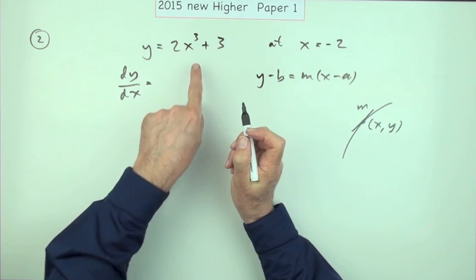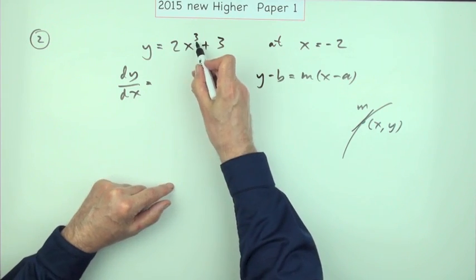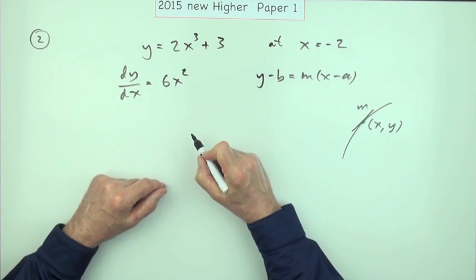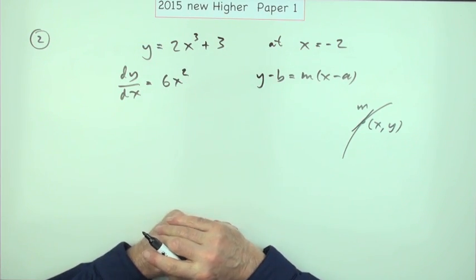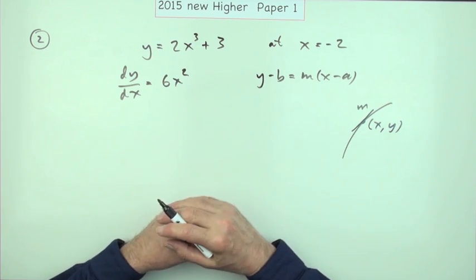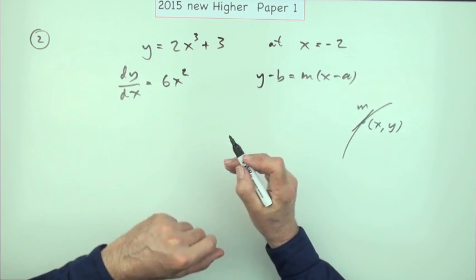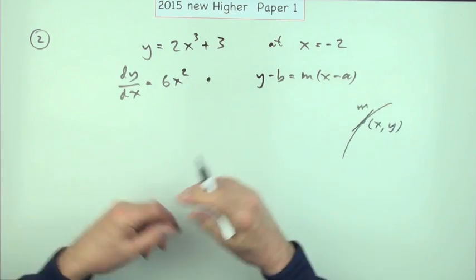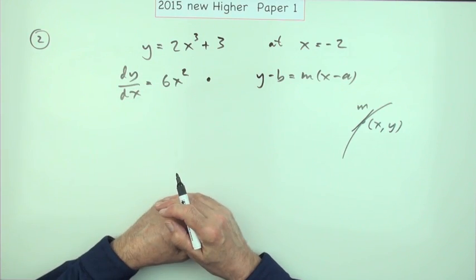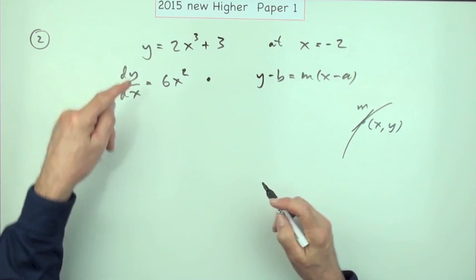dy/dx will be, and it's a very simple one: three times two is six, take one off the power, 6x². The constant disappears of course because it's constant so it doesn't change. And there's the first mark, not just knowing to differentiate but differentiating.